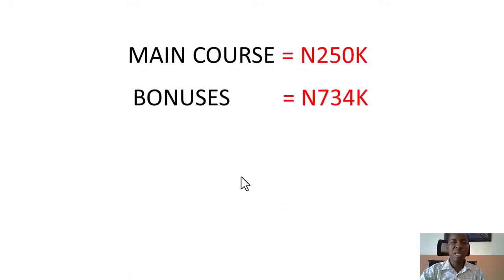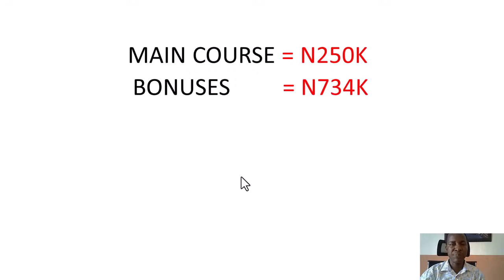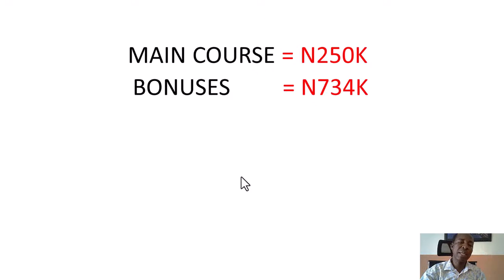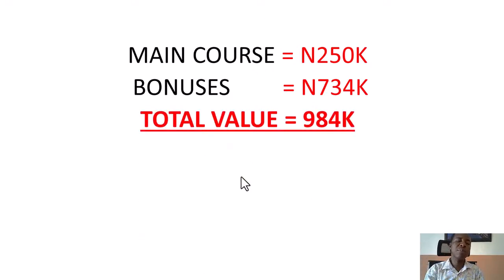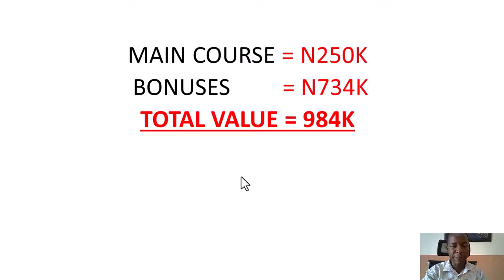If you calculate the total value you are getting from the bonuses alone, they are worth 734,000 Naira. So let's do the mathematics: the total value from the Revit course is 250,000 Naira, and the total value from the bonuses is 734,000 Naira — the bonuses are even more valuable than the course itself. That means the total value you are getting today is worth 984,000 Naira — that is very close to 1 million Naira. And how much am I selling it? Only 30,000 Naira. That is almost free.